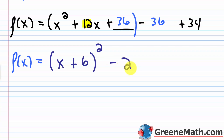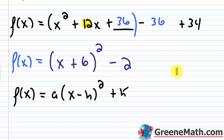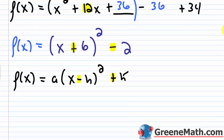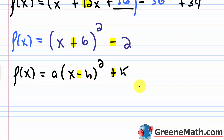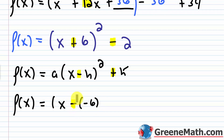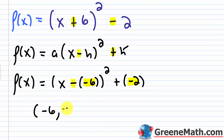So I've found my vertex form. If you want to match the standard format f(x) = a(x − h)² + k, you can write x + 6 as x − (−6). So the vertex form is f(x) = (x − (−6))² + (−2), and from here I can see the vertex occurs at negative six comma negative two.